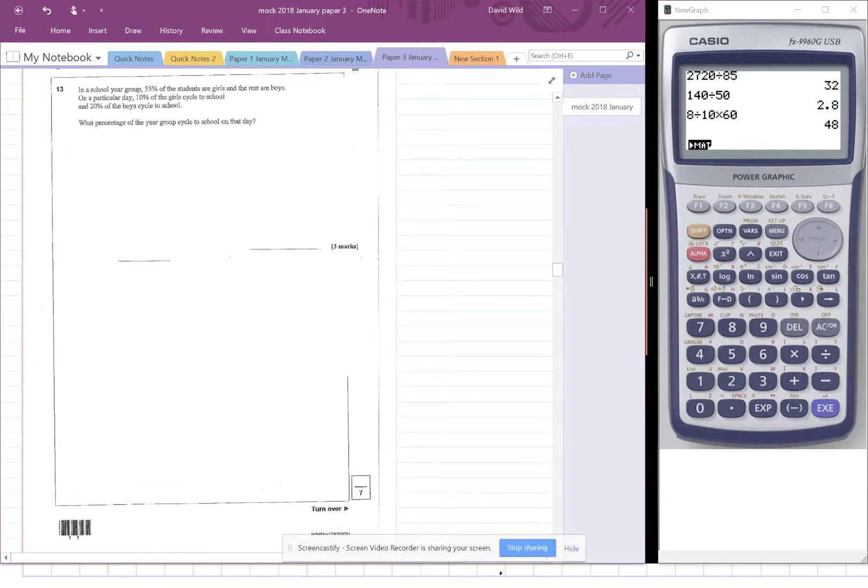Question 13. In a school year group, 55% of students are girls and the rest are boys. Okay. On a particular day, 10% of the girls cycle to school and 20% of the boys cycle to school. So we want to try and find out what percentage of the year group cycle to school on that day. So we want to work out the percentage.